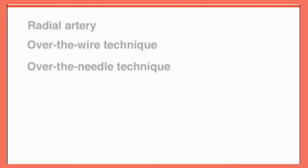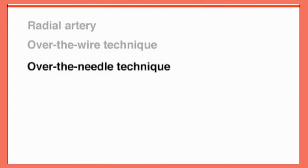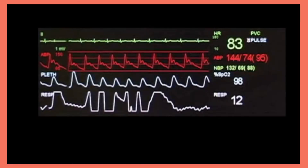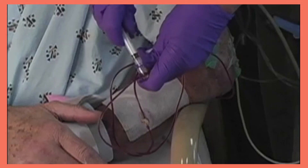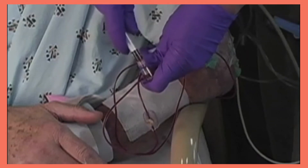This video will demonstrate arterial line placement in the radial artery using two of the many techniques available: an over-the-wire technique and an over-the-needle technique. Placement of an arterial line is indicated for continuous monitoring of arterial pressure and direct arterial blood sampling.